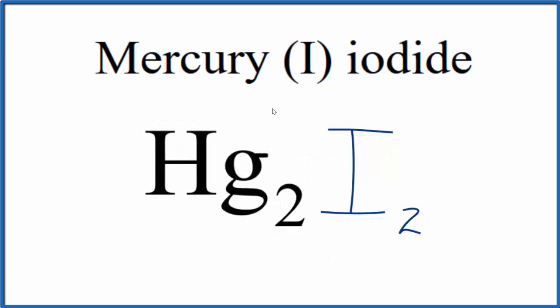So this is the formula for mercury one iodide: Hg2I2.